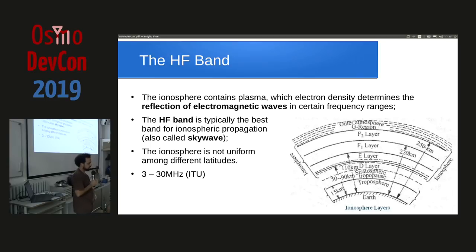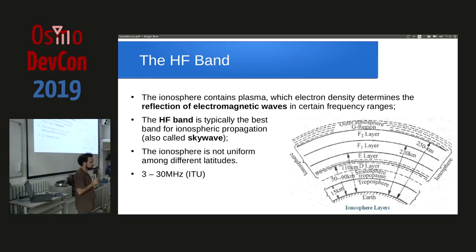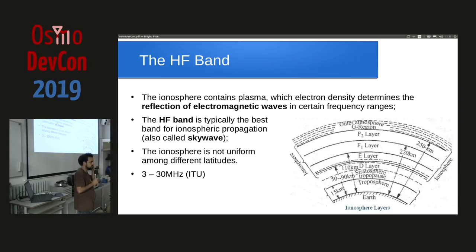What determines how good your signal will bounce in the ionosphere is the density of the plasma, the density of the electrons in the plasma. This is related to the sun, how much the sun bends the radiation to this layer. There is also the 11-year sunspot cycle. Right now we are at the bottom valley of the 25th sunspot cycle, so propagation is the worst possible now, which is actually good, because anything we develop now will work much better in coming years.